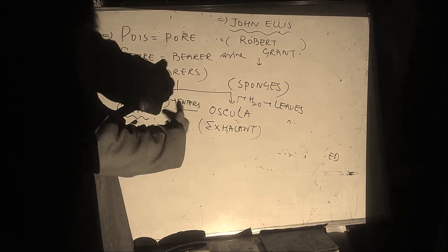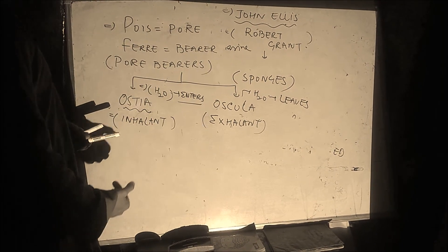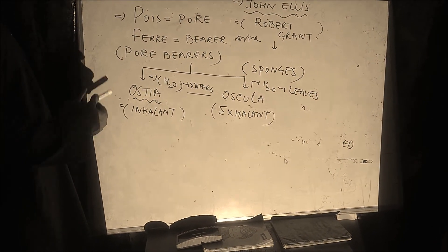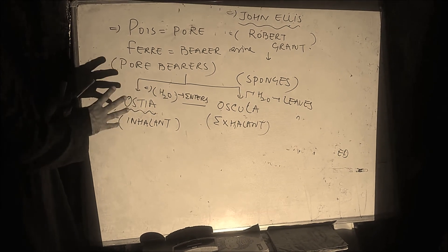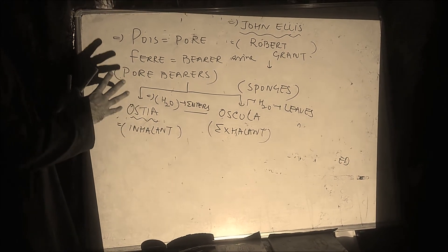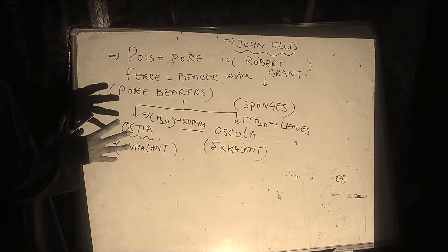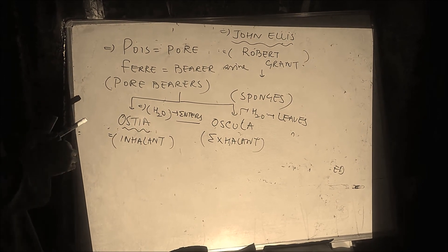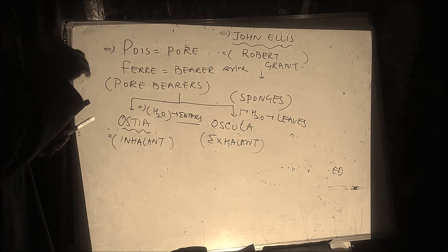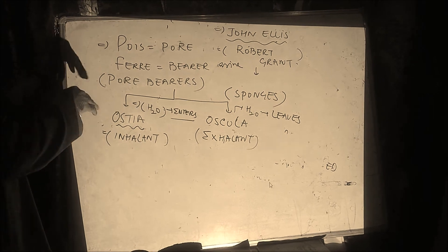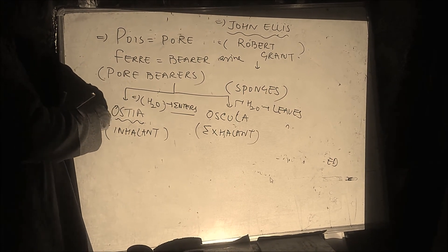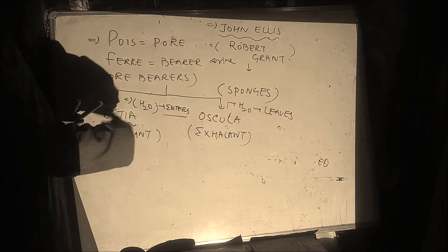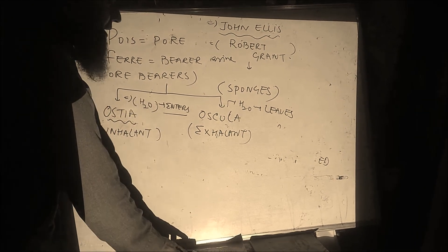They can have either one osculum or more than one osculum, but the number of ostia is more numerous. A sponge is perforated by small pores called ostia through which water enters the body, and water leaves through oscula, which are the exhalant pores.